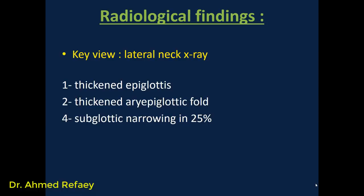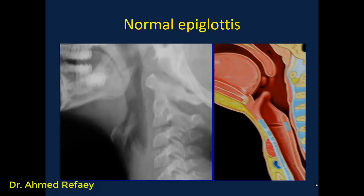In croup, there is 100% subglottic narrowing. This is a normal epiglottis — look at this color image showing normal anatomy. Here is the soft palate, the uvula, and the tongue. This is the nasopharynx, oropharynx, and hypopharynx. This is the epiglottis, and this one is the aryepiglottic fold. On lateral neck X-ray, here is the epiglottis and here is the aryepiglottic fold.